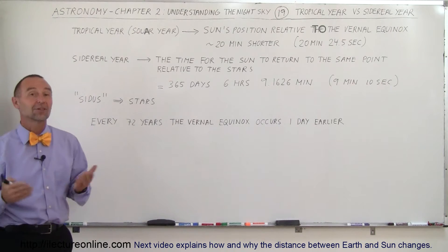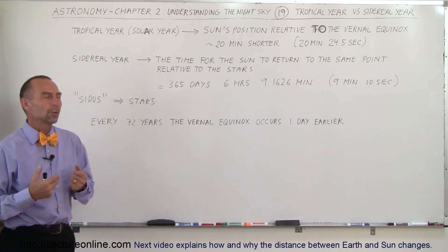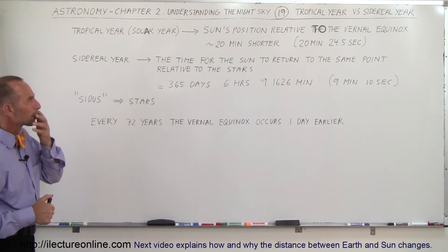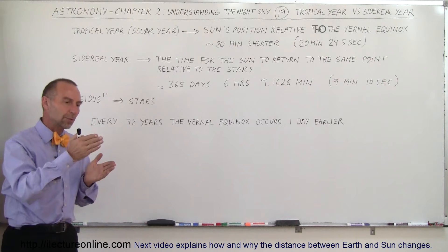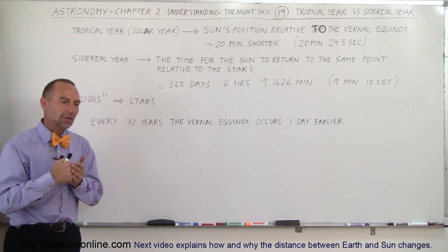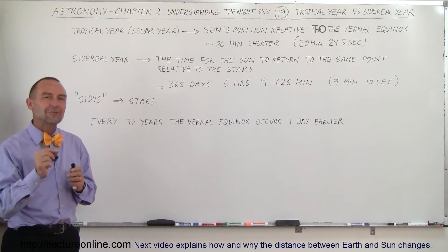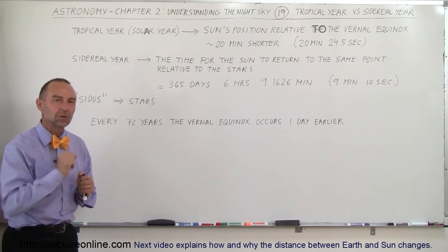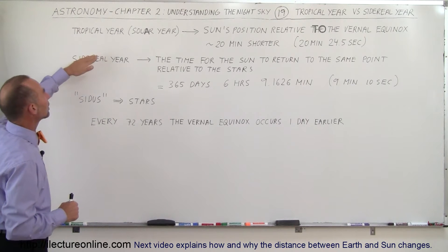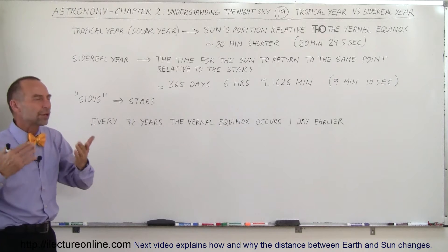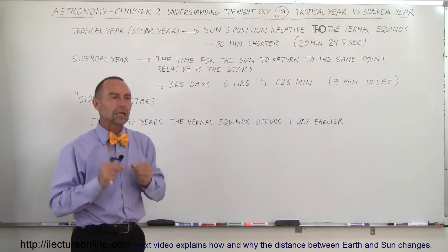There's what we call a tropical year and a sidereal year. A tropical year you can think of as a solar year relative to the Sun. So the tropical year, or solar year, is defined by the Sun's position relative to the vernal equinox — when the Sun appears at the vernal equinox, the autumnal equinox, the summer solstice, or the winter solstice.